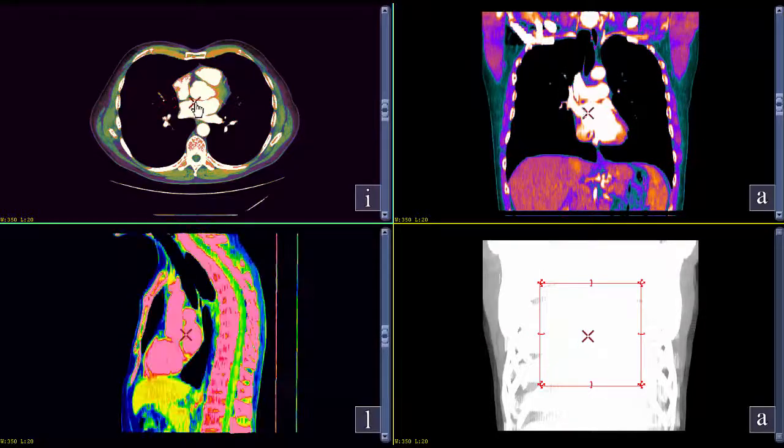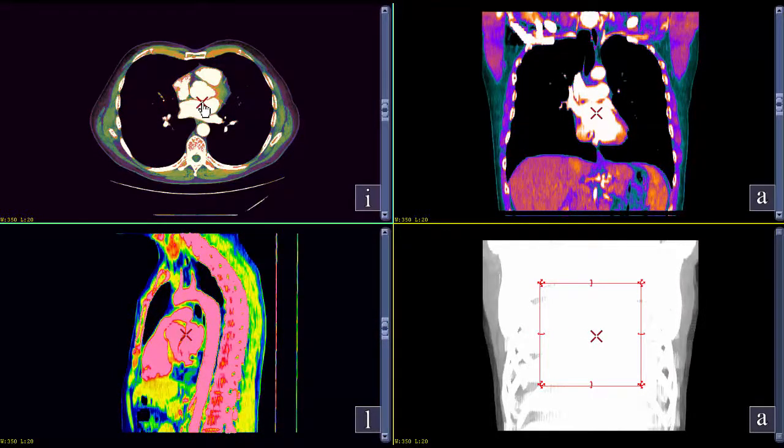If you ever have to have a CAT scan done on yourself, by the way, usually the x-ray technician type people, they're more than willing to give you a copy of your disc. And then you can play like this and look at your body parts, too. Anyway, I just wanted to show you this because I think it's better to see how these terms, frontal and transverse and sagittal, how they matter in terms of medical imaging. Let's go back and do a quiz up on the board.